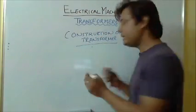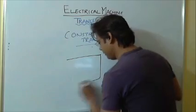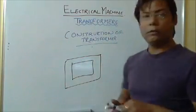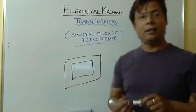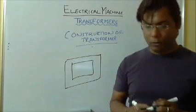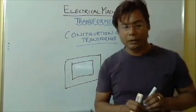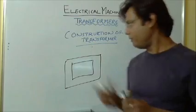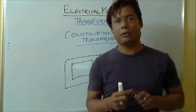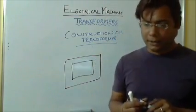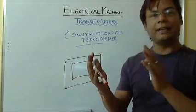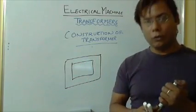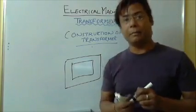There is a core. This core is normally made up of CRGO, that is called cold rolled grain oriented steel, which is maintained in such a direction that it will give minimum core losses as well as high permeability.